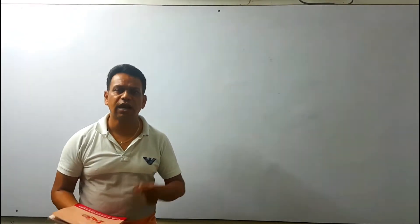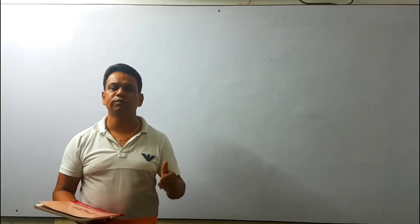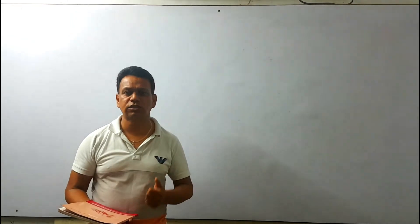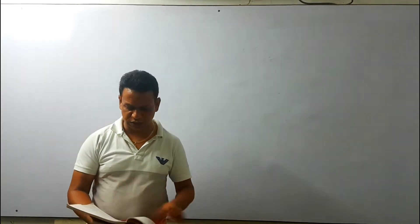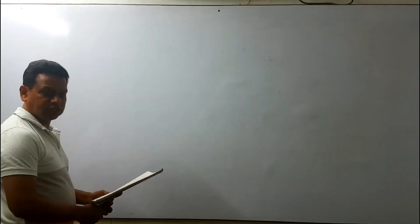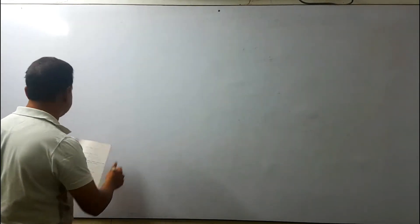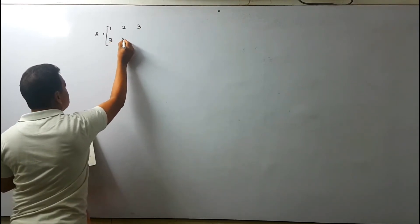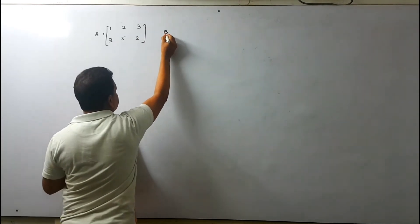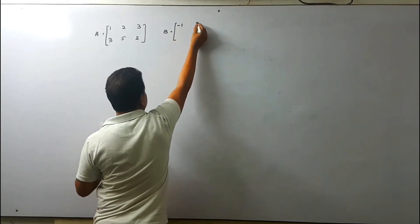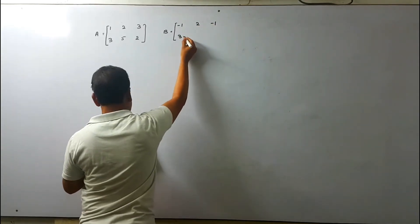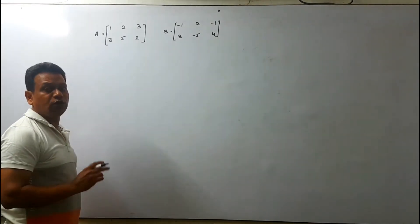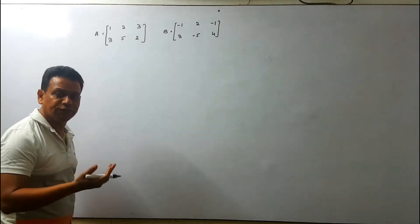I would like to discuss the first example from the book. Here is Illustration 15: from the given matrices, find A plus or minus B. The first matrix A equals 1, 2, 3, 3, 5, 2 and the other matrix B, of the same order, is minus 1, 2, minus 1, 3, minus 5, and 4. We have to find A plus or minus B.